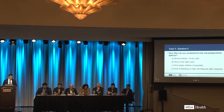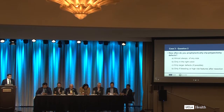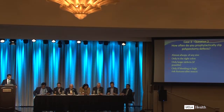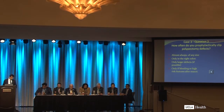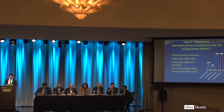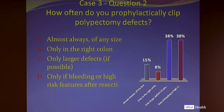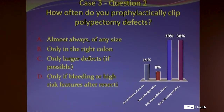We have an audience response question: for these types of polyps, one centimeter or greater, how often do you prophylactically clip-close your defects? Almost always of any size, only in the right colon, only larger defects if you can physically do it, or only if you have bleeding or a high-risk feature after resection? A few people do routine clipping of any size or only in the right colon. Most people try for larger defects or only if there's any high-risk bleeding.